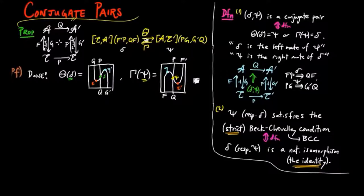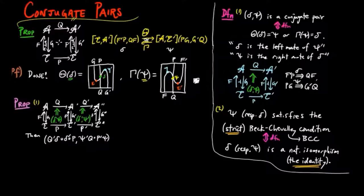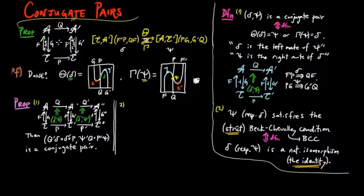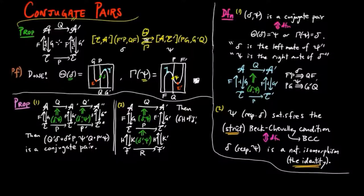The next result shows how conjugate pairs compose horizontally and vertically. One: if delta psi and delta-prime psi-prime are conjugate pairs in the following diagram, where the vertical morphisms are in adjoint situations, then q-prime delta, delta-prime p and psi-prime q, p-prime psi is a conjugate pair for the outer rectangle. And two: if delta psi and delta-prime psi-prime are conjugate pairs in the following diagram, then delta h, f-prime delta-prime, k-prime psi, psi-prime g is a conjugate pair for the outer rectangle.